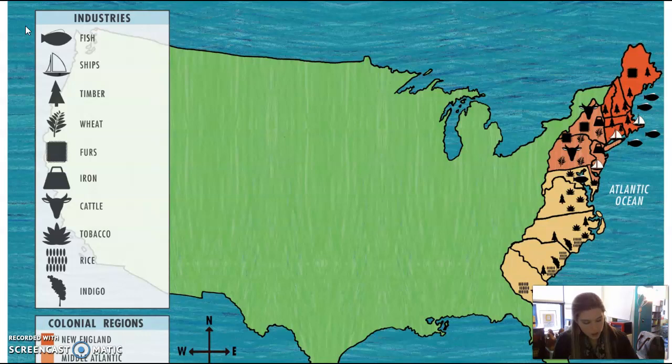Then we have the word manufacture: to build, construct, create, or produce. Our next word is potential: possibility, capability, promise, or ability.